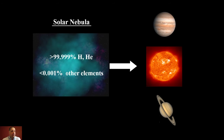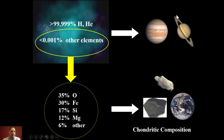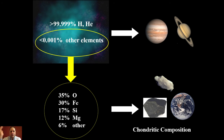Our solar nebula was 99.999% hydrogen and helium — that's what the Sun is like, and that's what the outer planets are like. What's left when you blow away most of that gas are things like chondrules, chondrites, the asteroids that are chondrites, and the rocky planets. Another way to get at what the nebular composition was is to analyze the Sun with spectroscopes and other instruments, then look at chondrites, and reassemble the nebula by mixing those two sets of observations together.